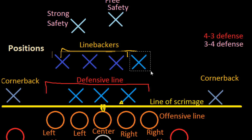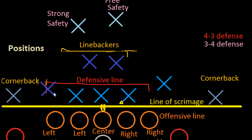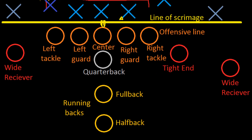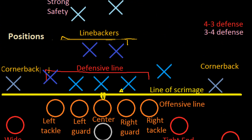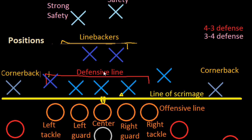These guys can stand wherever they want — sometimes linebackers will come up closer to the line. But overall, the basic layout is safeties in the back, then linebackers, then the defensive line, with two cornerbacks on the outside. Just like offense, either team can swap players between each play. There's really no requirement of any one guy standing in any one spot, so you can really move around and try to confuse the offense — but we'll get into that when we talk about strategy.